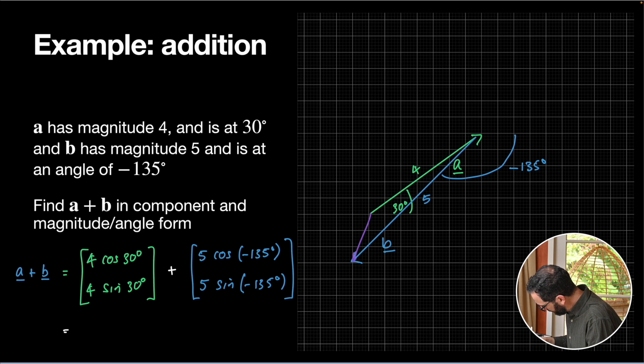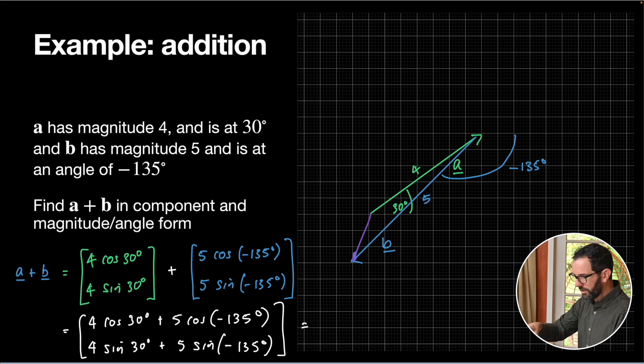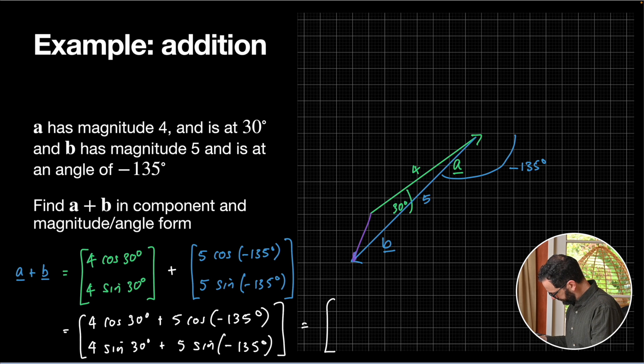Now we can just use our normal vector addition, which is just to add those numbers together. So that equals 4 cos 30 degrees plus 5 cos negative 135 degrees for the first component, and 4 sine 30 degrees plus 5 sine negative 135 degrees. And now I'd go to my calculator and do each one of those separately. So 4 cos 30 plus 5 cos negative 135 gives me quite a small, I'm just going to write like four decimal places.